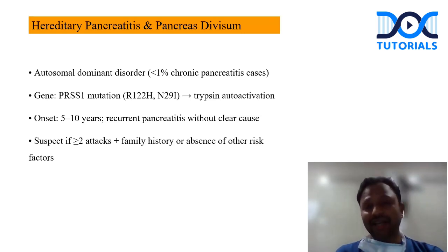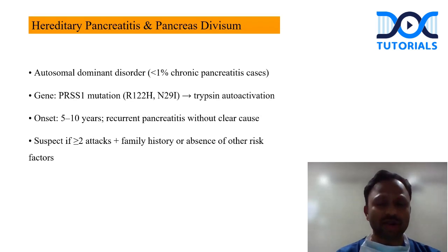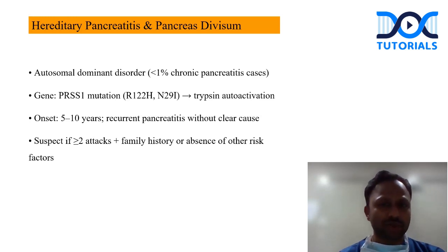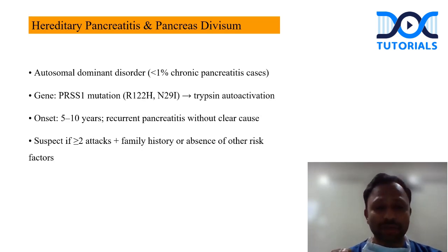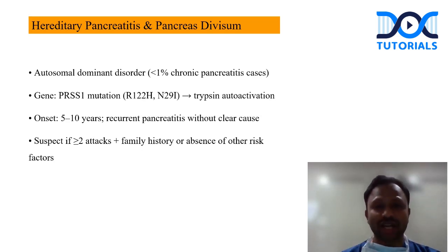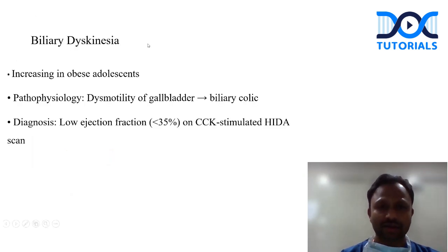The first topic is with regards to recurrent pancreatitis in children. We all know the common reasons — viral causes and gallstones. But there is an entity called hereditary pancreatitis and pancreas divisum. Hereditary pancreatitis is an autosomal dominant disorder with less than 1% of chronic pancreatitis cases. The gene mutation to look into is PRSS1 gene mutation with trypsin autoactivation. Onset is usually around 5 to 10 years. They present with recurrent pancreatitis without any clear cause, and you should suspect it if there are two or more attacks with a positive family history or absence of any other risk factors.